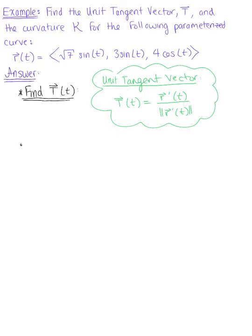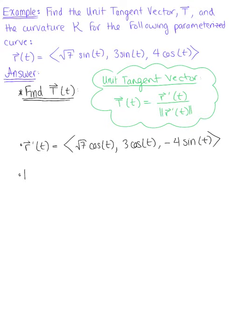Looking at our given curve, we want to find the tangent vector r prime. This gives us the square root of 7 multiplied by cosine of t, 3 multiplied by cosine of t, and then minus 4 sine of t. Since there are no common scalars to pull out, we'll go right for our magnitude.